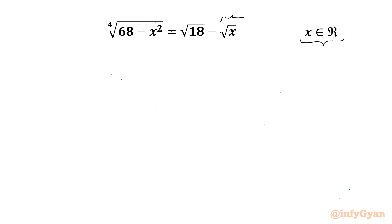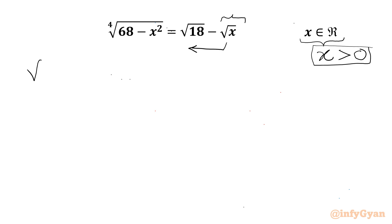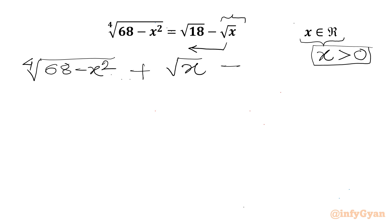Here we have square root of x, so x must be positive. Now we can take minus root x to the LHS, so we can write: 4th root of (68 minus x²) plus square root of x equal to square root of 18.